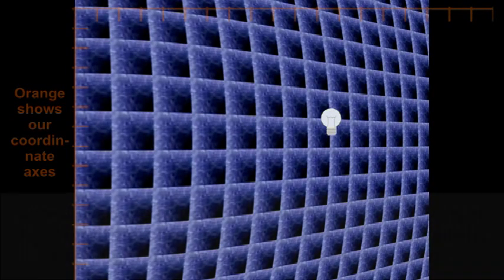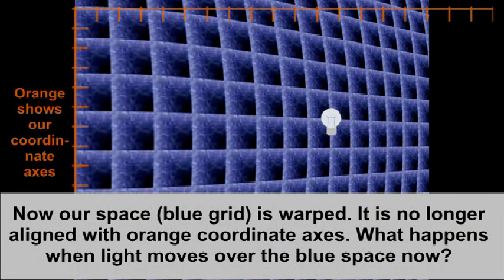Let's warp the spacetime. Now our space, the blue grid, is warped. It is no longer aligned with the orange coordinate axis. So what happens when light moves over the blue space now?